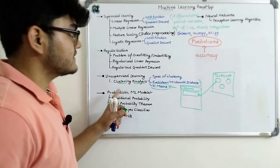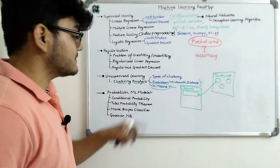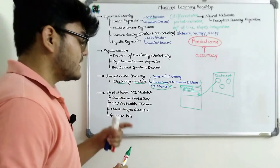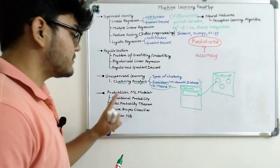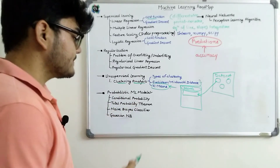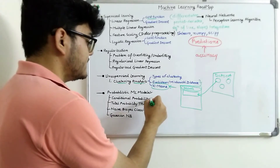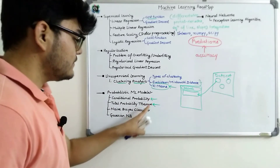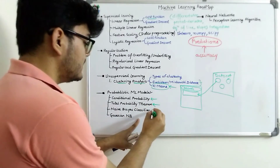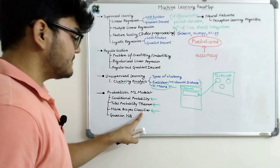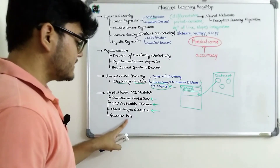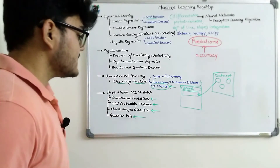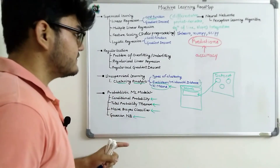Next are probabilistic machine learning models. For these, you will need probability, conditional probability, and the total probability theorem. After studying these, you will be able to understand and implement the Naive Bayes classifier and its variant, the Gaussian Naive Bayes classifier.